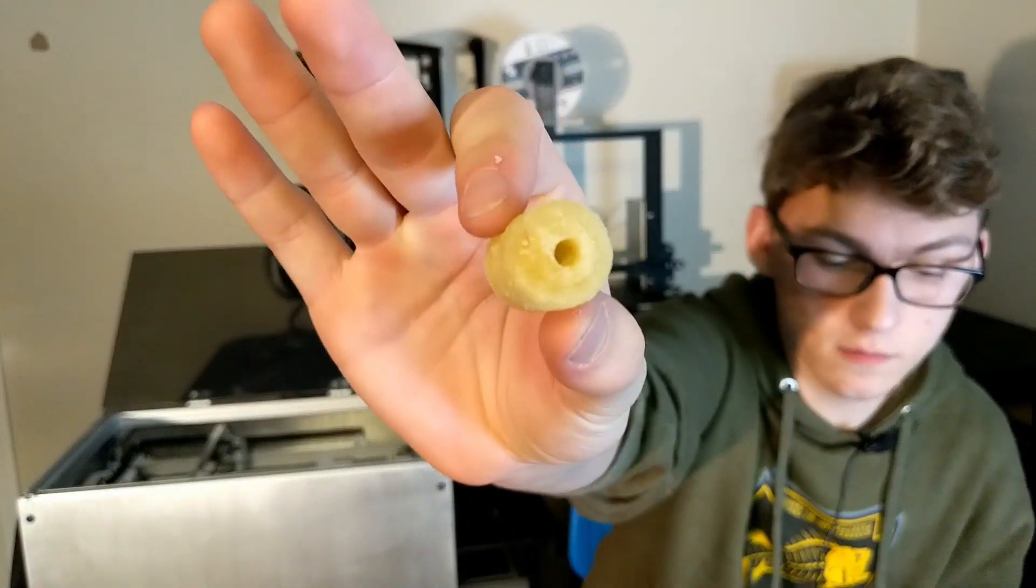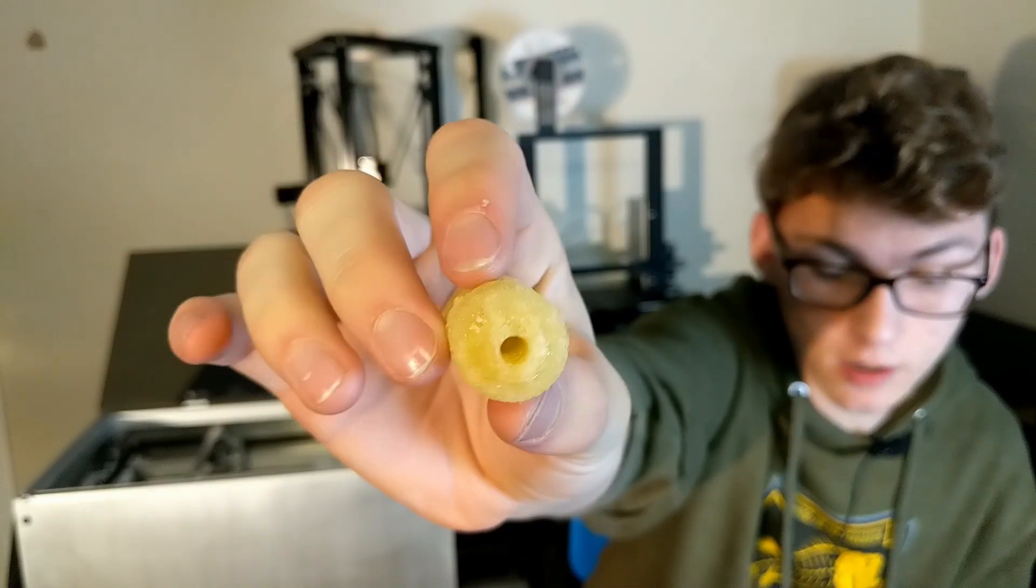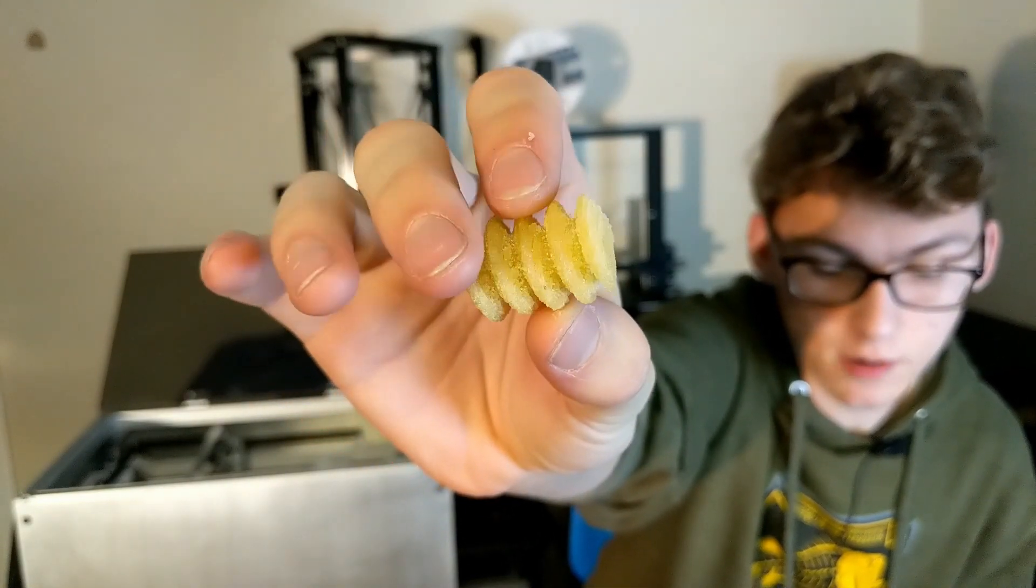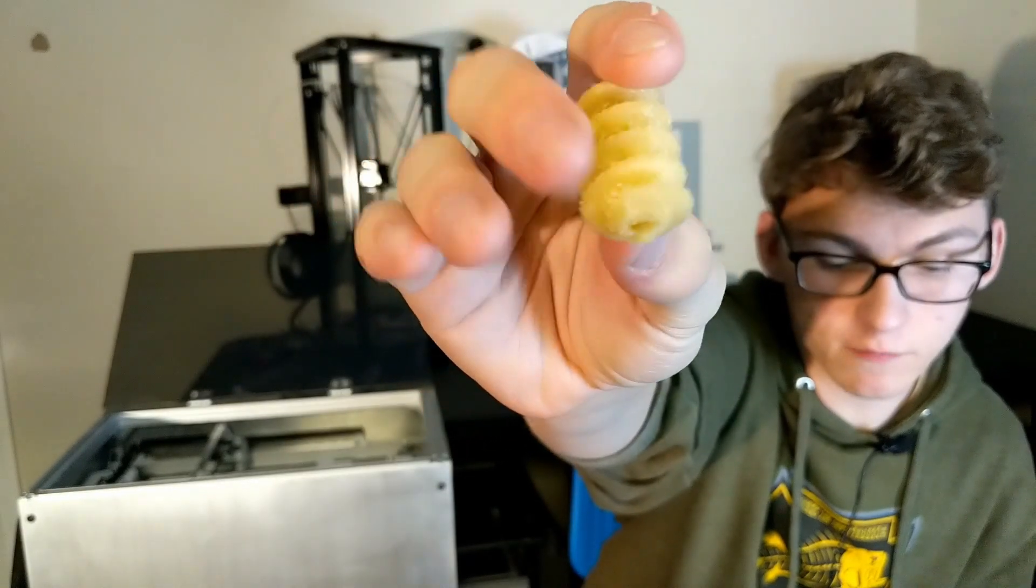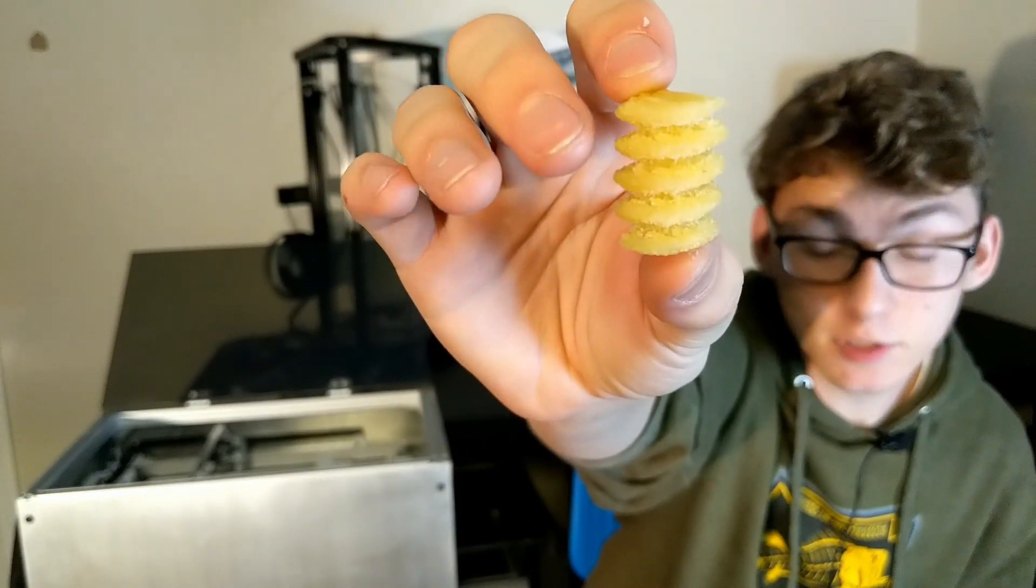I'll just show you right now some of the prints that I've done on this. Right here, this is actually sucrose table sugar. It's what you'd have in your kitchen. This is the bottom side. This is the top side. I printed it vertically. Absolutely no supports.